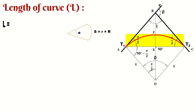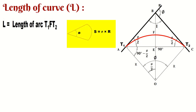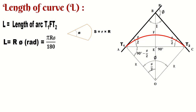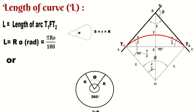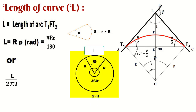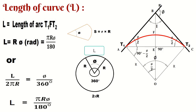How to find the length of curve? The length equals the length of arc T1FT2. Consider a portion of an arc and use the relation: arc length S equals R times the angle θ. So L equals R·θ in radians. Multiply by π/180 to convert to degrees. The length of curve equals π times R times the deflection angle divided by 180. Alternatively, using arc similarity: L divided by 2πR equals φ/360, giving L equals 2πR·φ/360, which simplifies to πR·φ/180.